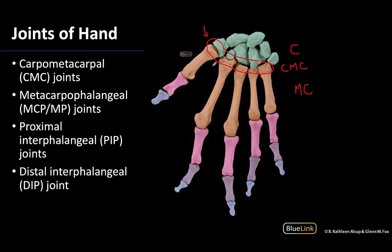Next we reach the metacarpophalangeal or MCP joints, which are between the metacarpals and the proximal phalanges — sometimes you see MCP, sometimes MP joints. These are the joints that form that knuckle region, and these are mostly condyloid joints, so capable of those same motions we just discussed with the saddle joint, just to a slightly smaller degree.